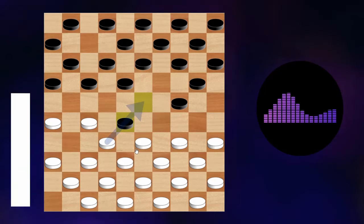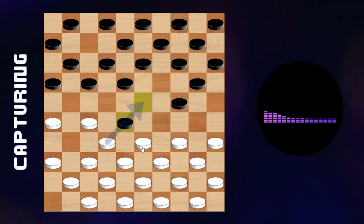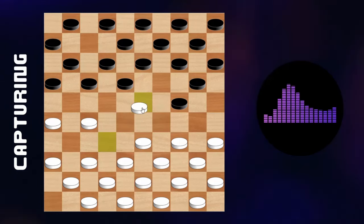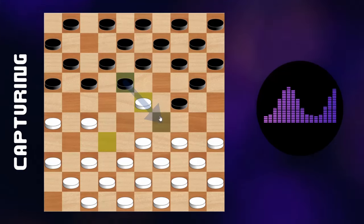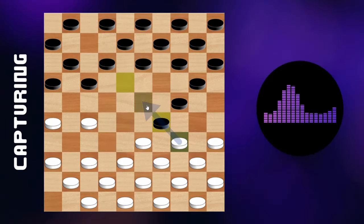Capturing is done by jumping over an opponent's piece, two squares backwards or forwards, to an unoccupied square immediately beyond it. Capturing is always forced, so when a player can capture, he or she must capture.